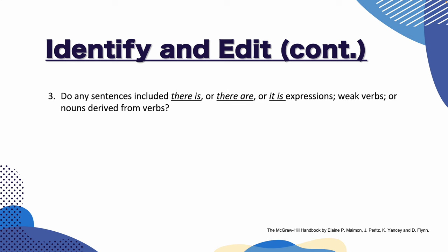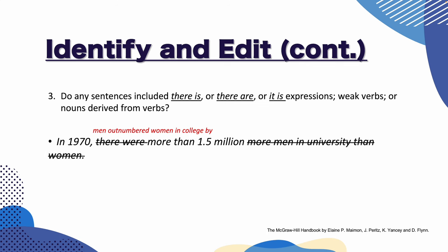Do any sentences include 'there is,' 'they are,' or 'it is' expressions, weak verbs, or nouns derived from verbs? Like in this example: 'In 1970, there were more than 1.5 million more men in university than women.' Instead of writing that, we can write: 'In 1970, men outnumbered women in college by more than 1.5 million.' In this example, 'there were' and 'more men in university than women' are erased because the verb 'outnumbered' already means more than.